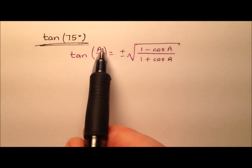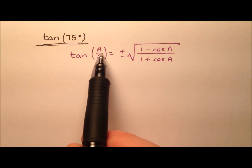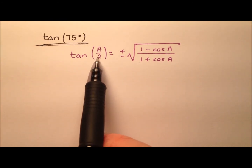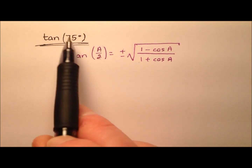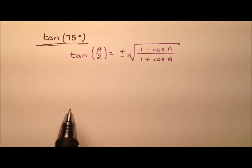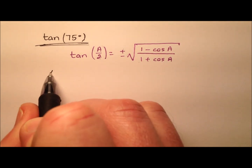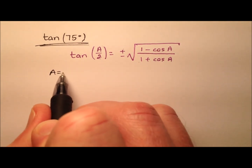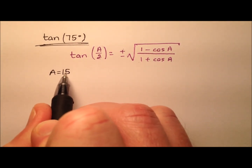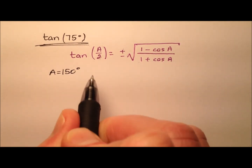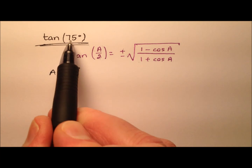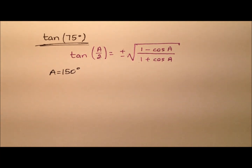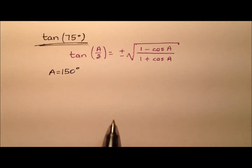What should our value of a be? Whenever we cut a in half, we get 75 degrees, so a needs to be 150 degrees, which is twice 75 degrees.